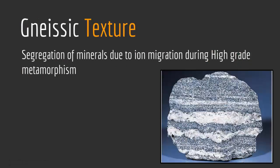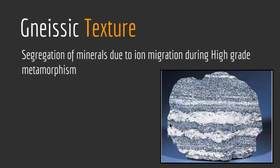The last type of foliated texture is gneissic texture. Gneissic texture is a segregation of minerals due to ion migration during high-grade metamorphism. When a rock is subjected to high-grade metamorphism, this leads to migration of ions and creates band-like features called gneissic texture. The name comes from the metamorphic rock gneiss, characterized by banding of typically light and dark minerals. It is also indicative of high-grade metamorphism around 600–700°C — enough heat for ion migration to occur, creating these band-like textures.